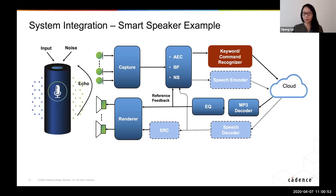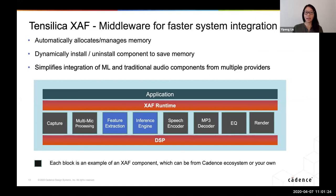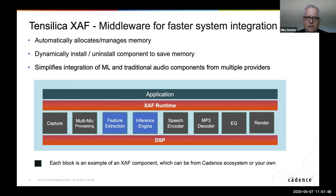Here's an example of system integration where we integrate many different components, including the keyword spotter we just showed, with pre-processing, capture, render, and different components. To do that, we provide a middleware for faster system integration. It manages memory, can dynamically install and uninstall different components. These components come from Cadence or from our ecosystem partners. We provide this framework to make integration much easier, and it is available in open source — anyone who has a HiFi DSP can use this.